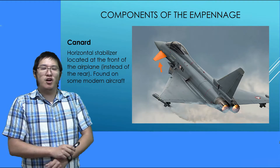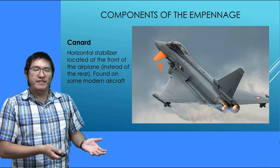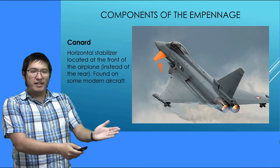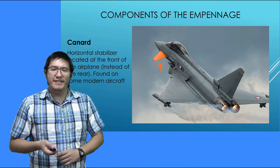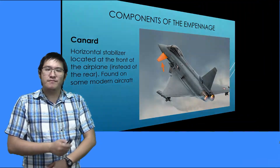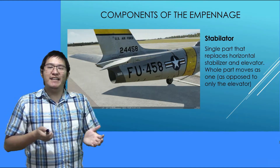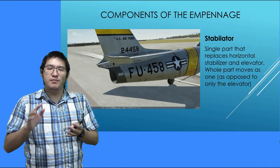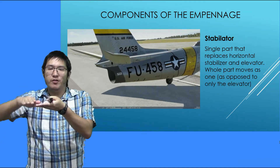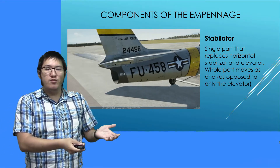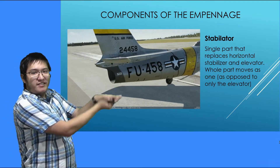Another thing you should know about is what we call a canard. A canard is a horizontal stabilizer located at the front of the airplane, as opposed to the rear. This is usually found on modern aircraft, and they have their own pros and cons, which will go beyond the scope of this course. Next we have what we call a stabilator. A stabilator is a single part that replaces both the horizontal stabilizer, which doesn't move, and the elevator, which moves. In this case, the whole part moves as one, as opposed to only the elevator moving.